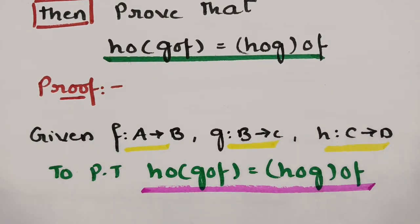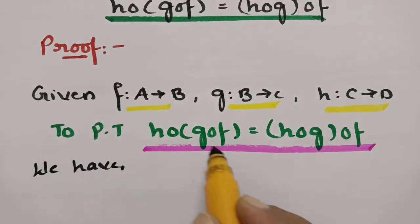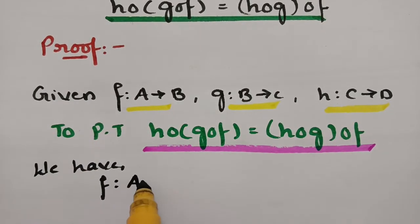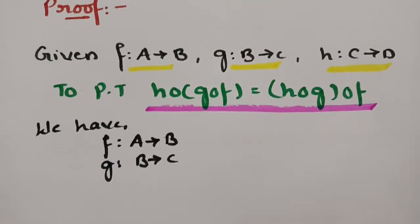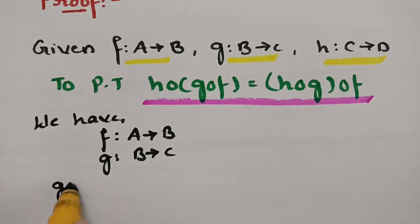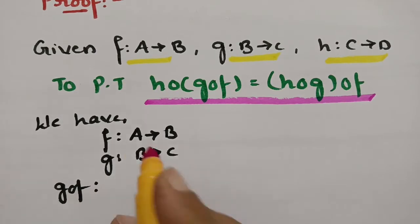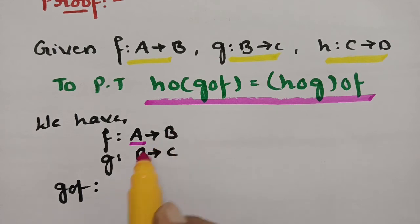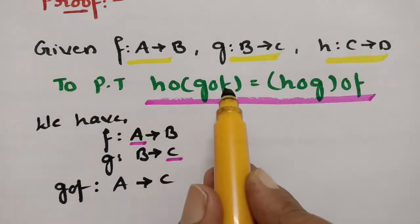In order to prove this, we have to check whether the domains of the given functions are the same or not. We have F maps from A to B, and G maps from B to C. So G∘F will be the composition — we start with F. The common sets cancel, so G∘F maps from A to C.